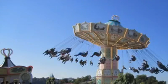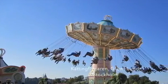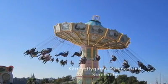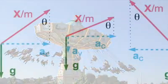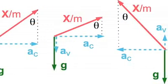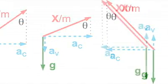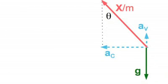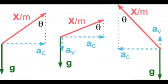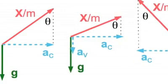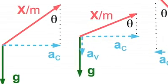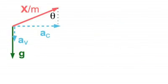The force situation becomes a bit more complex when the tilting roof is taken into account. As the swings move up and down, there is also an associated vertical acceleration. During the lower parts of the motion, this acceleration is directed upwards and leads to a reduction of the angle, but an increased force on the rider. During the higher parts of the motion, the vertical acceleration is directed downwards, leading to a larger angle but a smaller force.